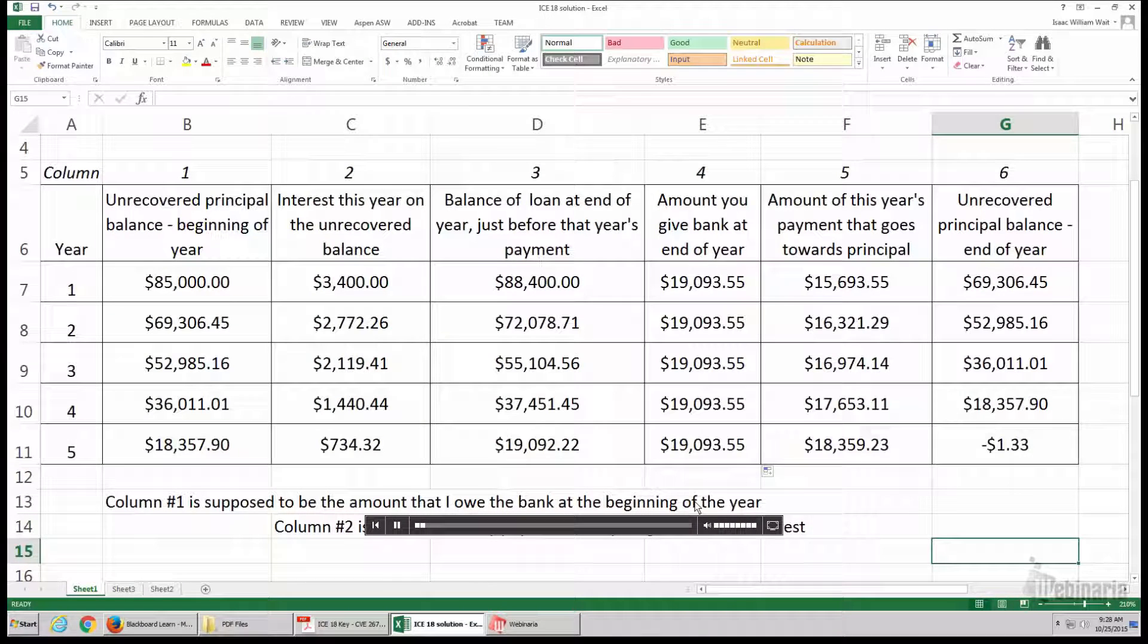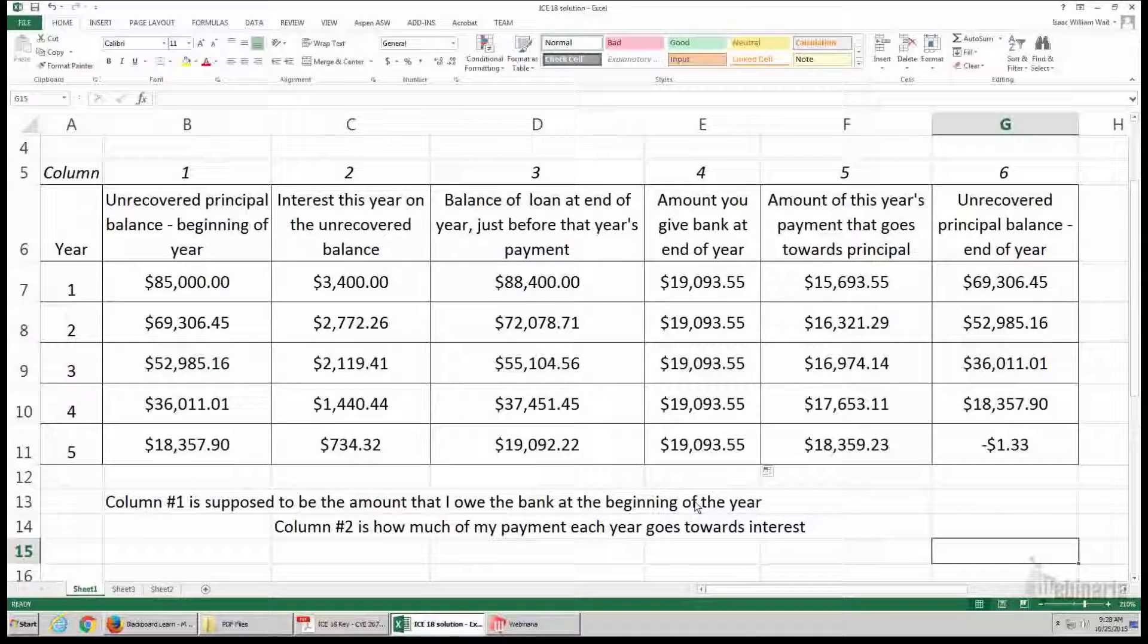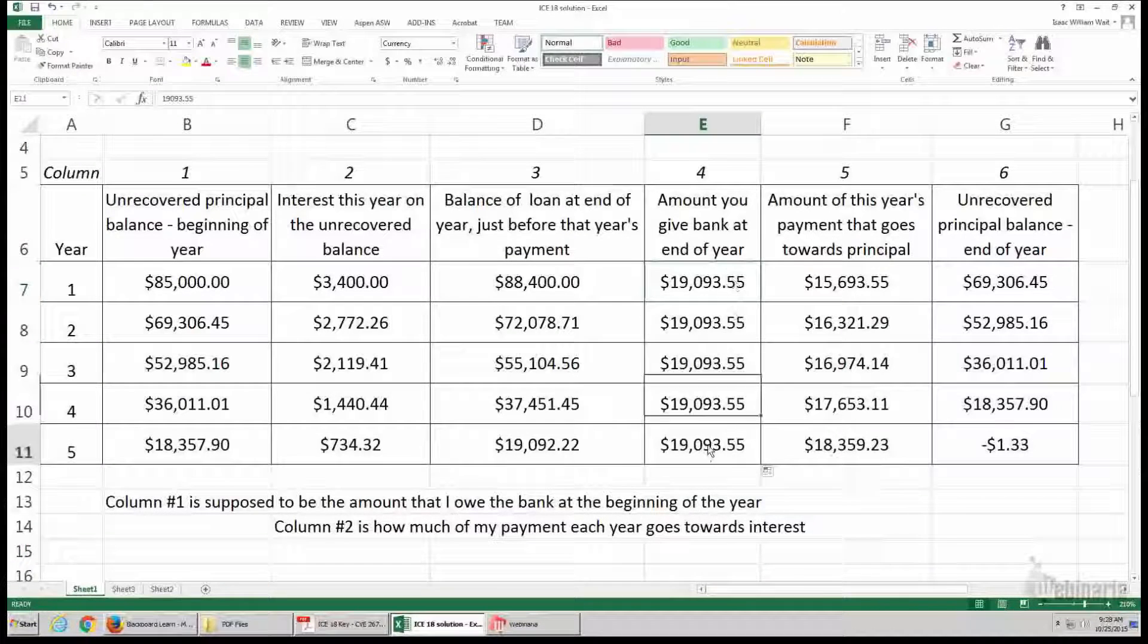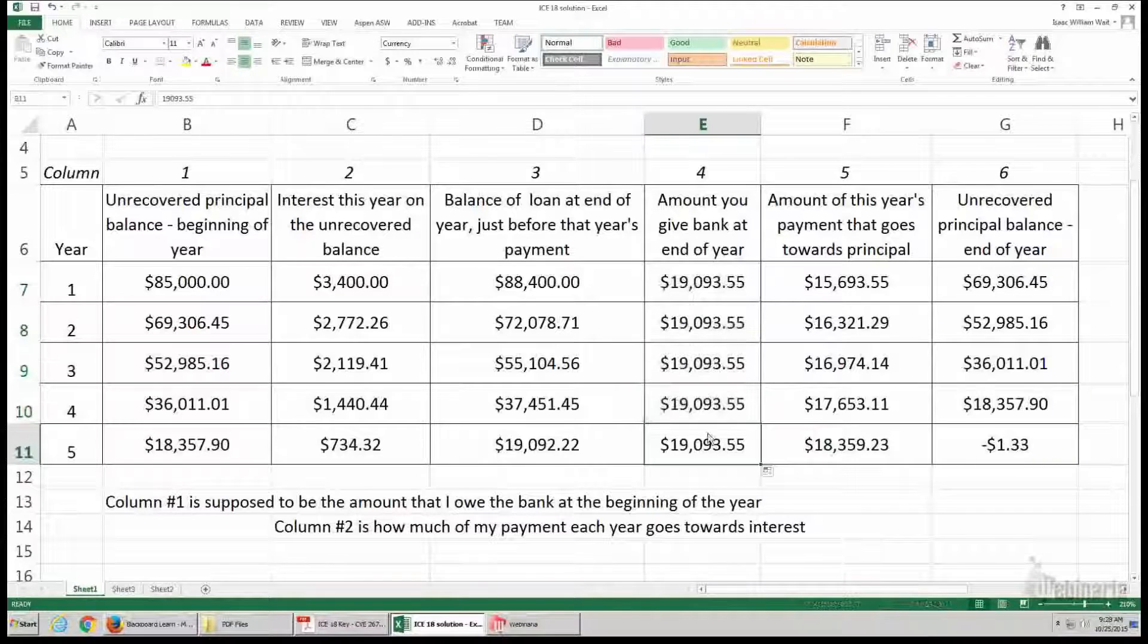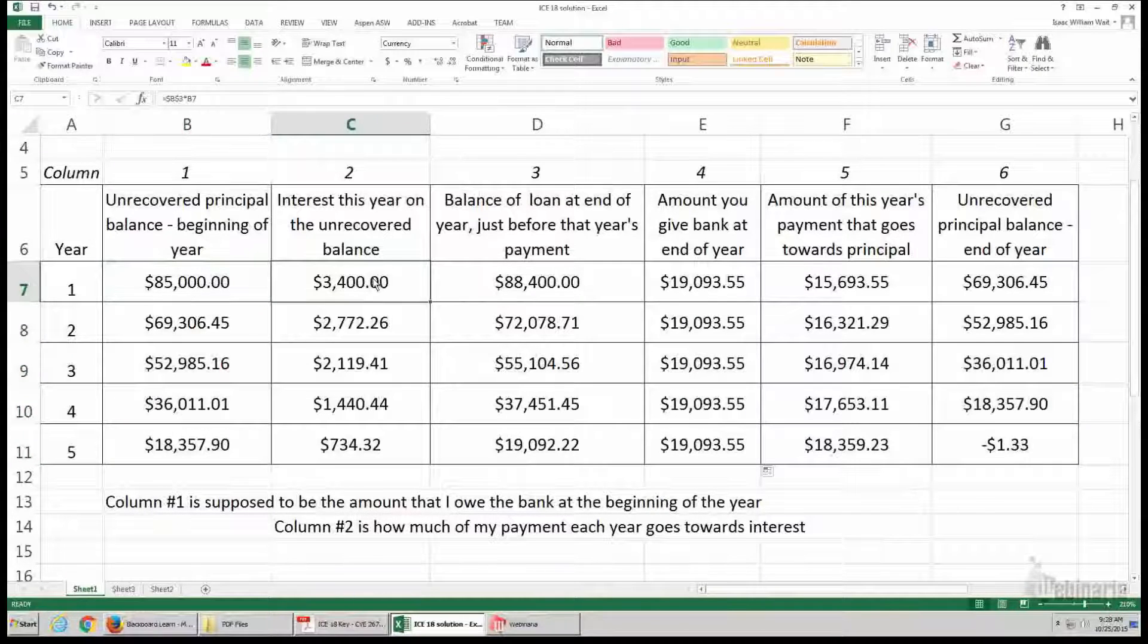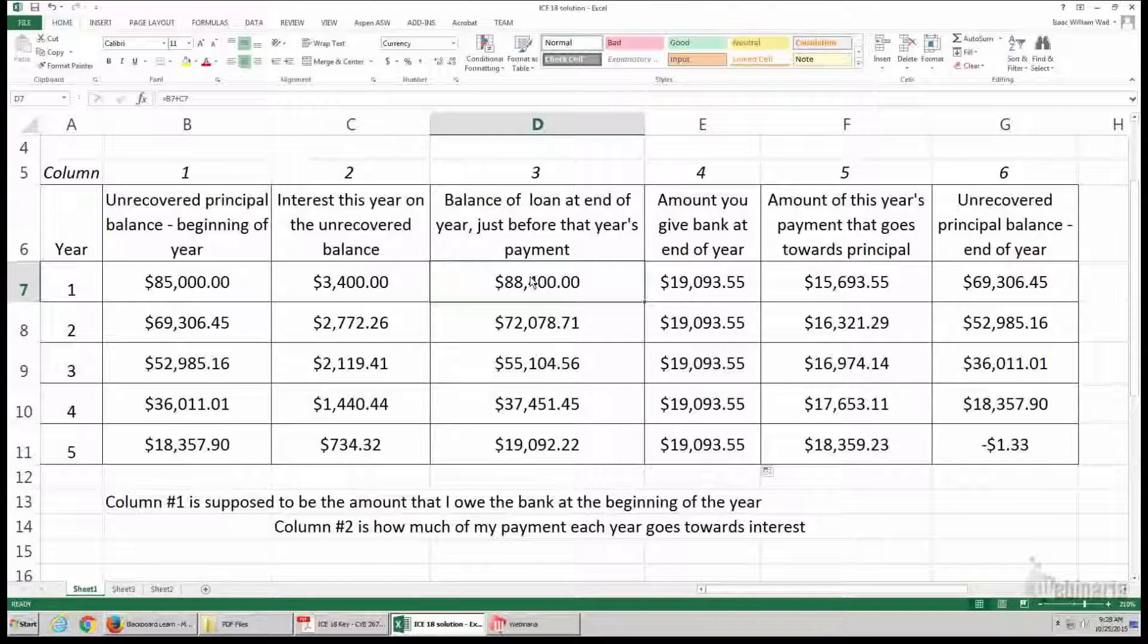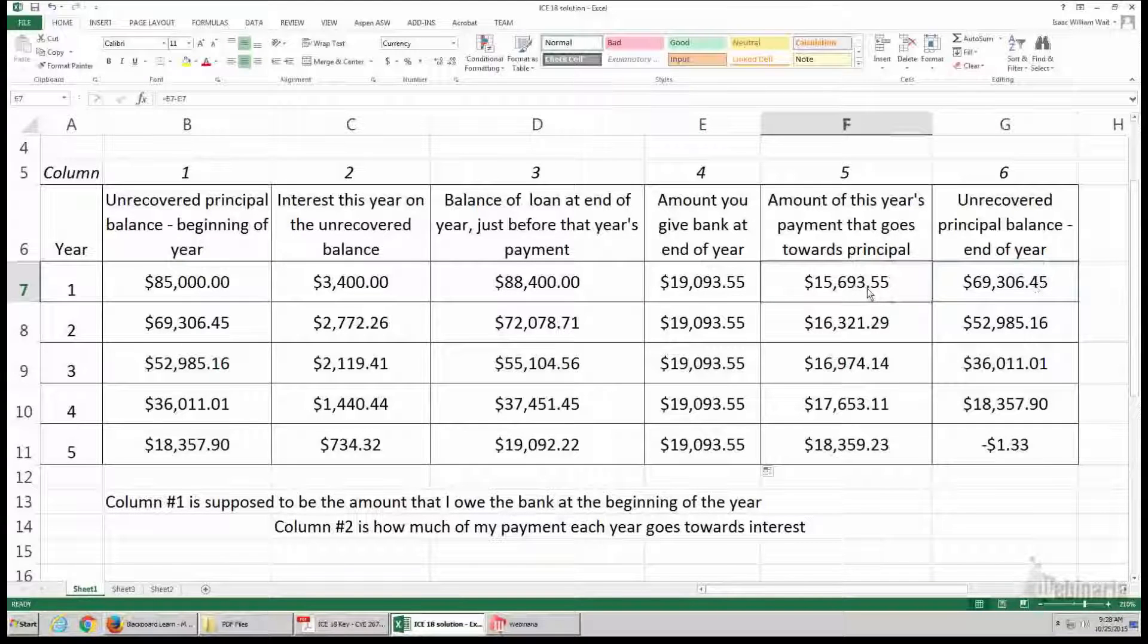This is what you should see based on the description for the formulas and based on the amount that you look up from the table. So here is the table lookup amount. This is the balance at the beginning of the year, then the interest accumulates during that one year period, and so now this is how much you owe before you make the payment. You pay this amount, and then this is how much you owe after the payment.